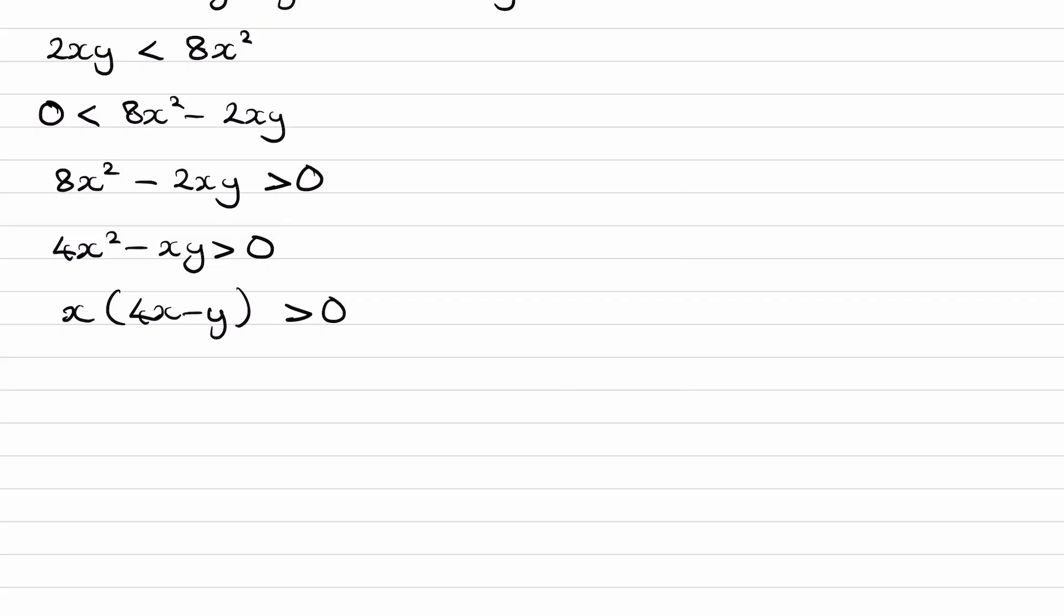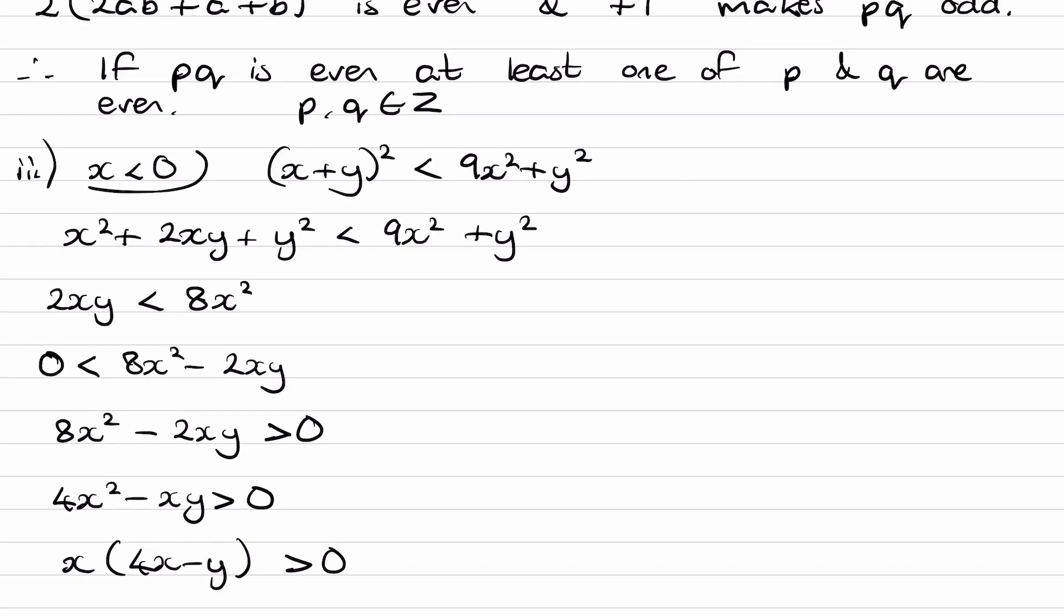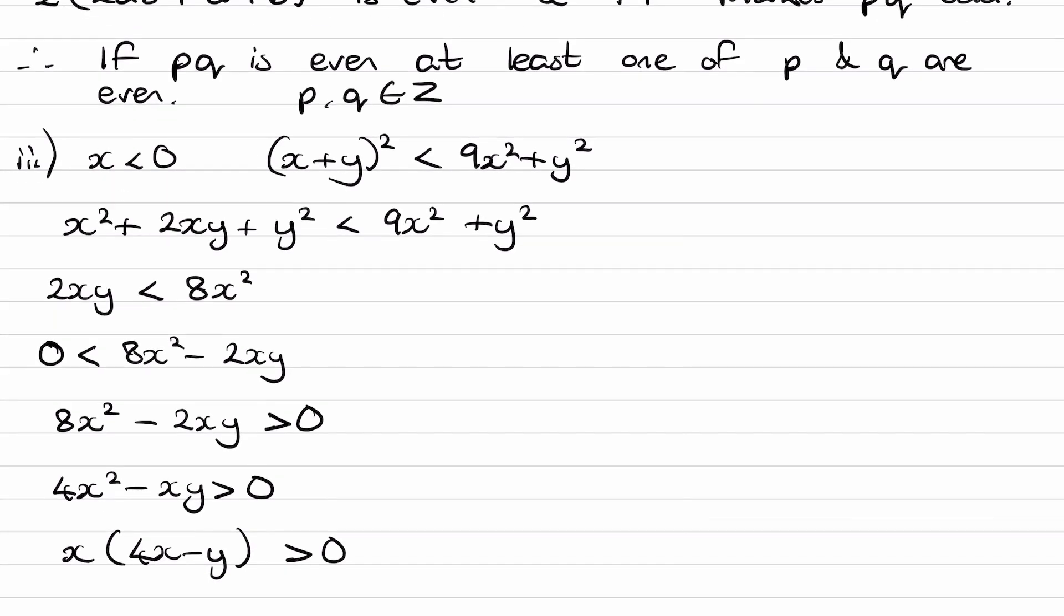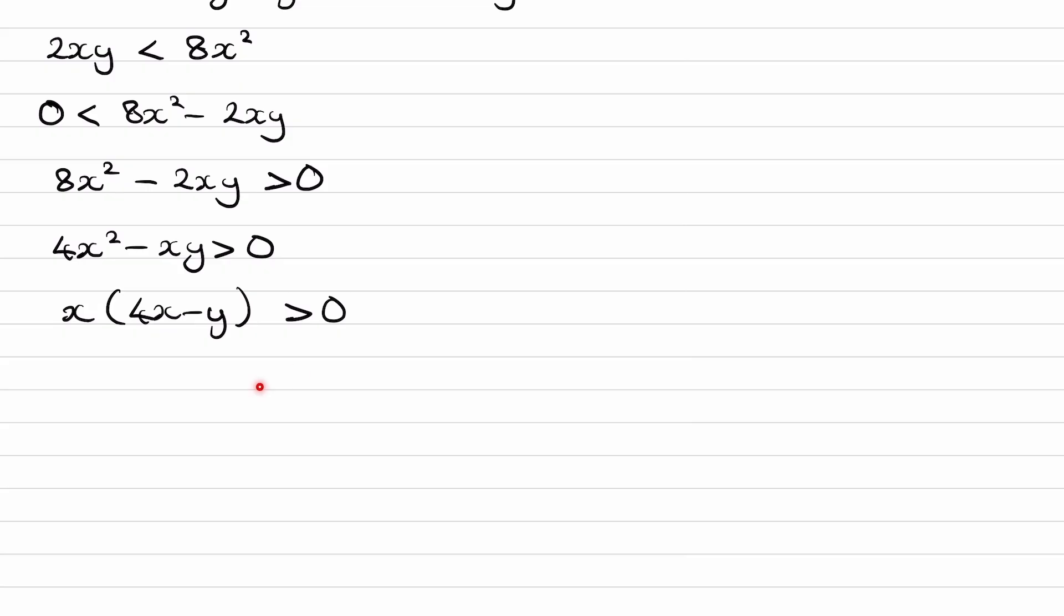And we are told in the beginning that X is less than 0, so X is negative. If you divide both sides of an inequality by a negative number, if I divided both sides of this inequality by X, that changes the direction of the inequality. So the rule is, whenever you divide or multiply both sides of an inequality by a negative number, you have to change the direction of the inequality symbol. So this then becomes 4X minus Y is less than 0.